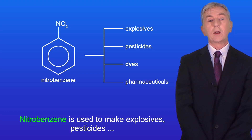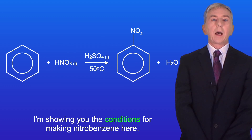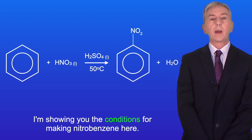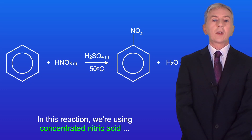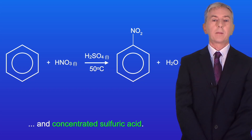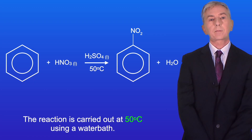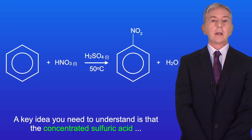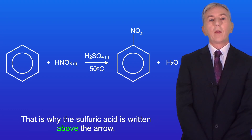Nitrobenzene is used to make explosives, pesticides, dyes and pharmaceuticals. Here are the conditions for making nitrobenzene, which you need to learn. In this reaction we use concentrated nitric acid and concentrated sulfuric acid, and the reaction is carried out at 50 degrees Celsius using a water bath. The concentrated sulfuric acid is acting as a catalyst in this reaction, which is why the sulfuric acid is written above the arrow.